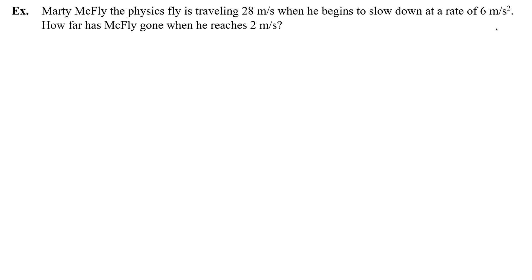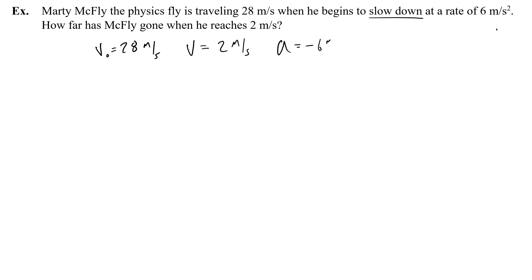Marty McFly the physics fly is traveling 28 meters a second when he begins to slow down at a rate of 6 meters per second squared. How far has McFly gone when he reaches 2 meters a second? My initial velocity is 28, my final is 2, and my acceleration — we need to be careful — since we're slowing down and our velocities are positive, the acceleration is in the opposite direction, so negative 6 meters per second squared. We want to find delta x.